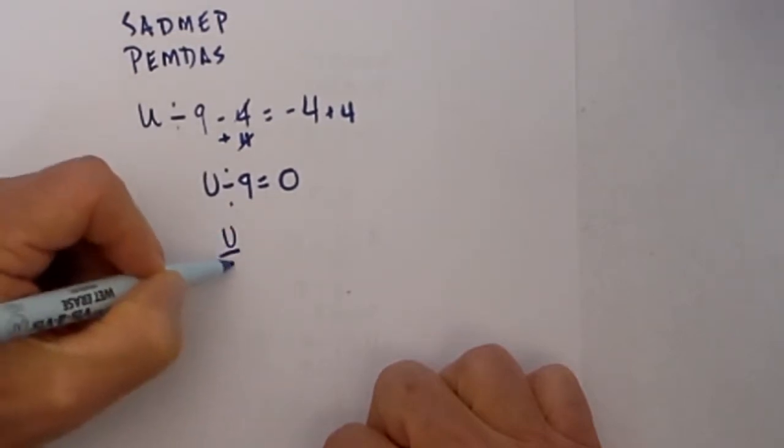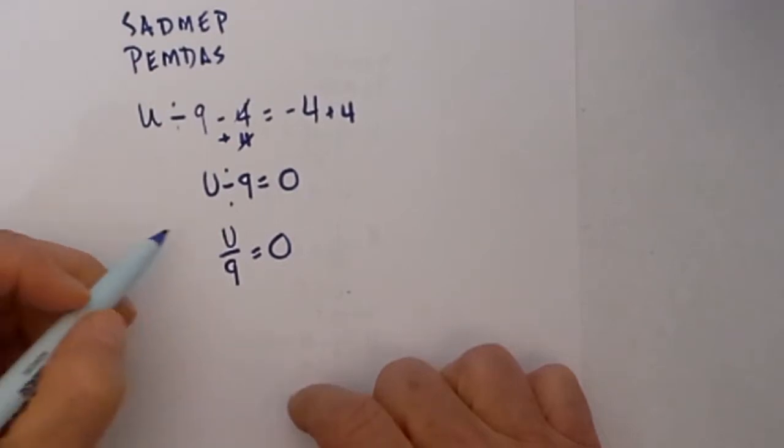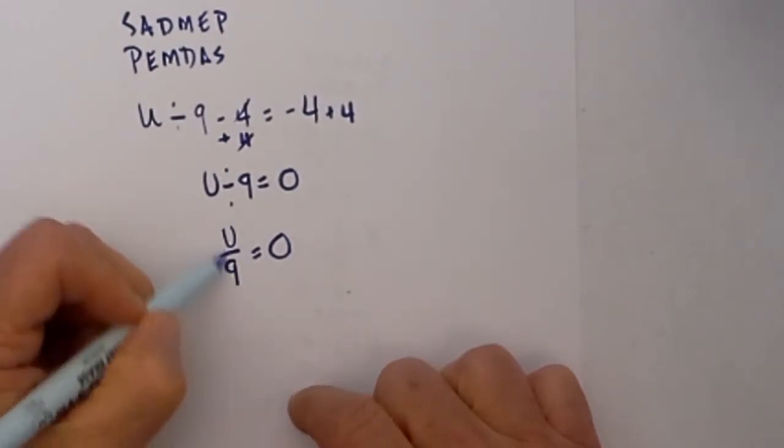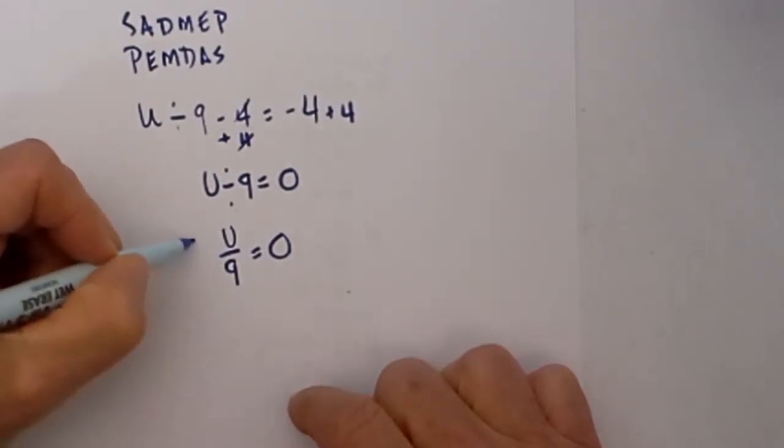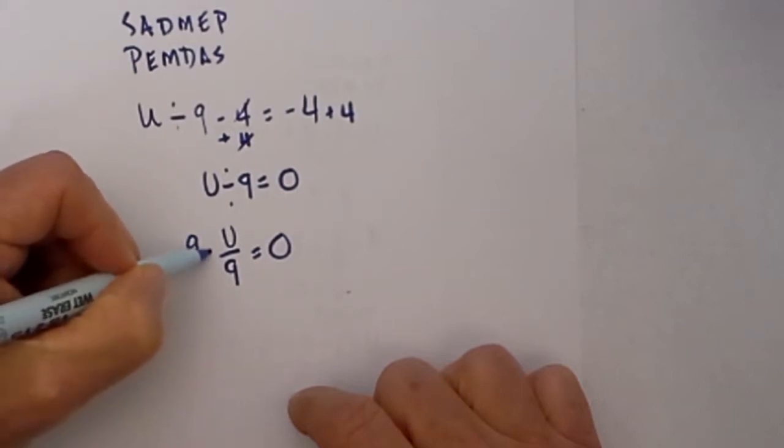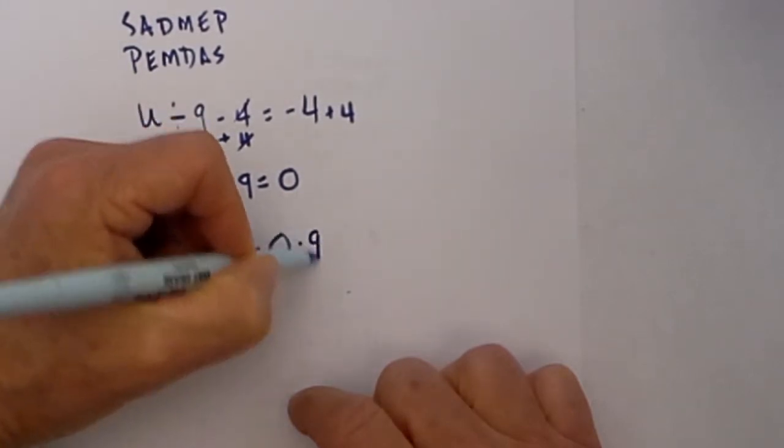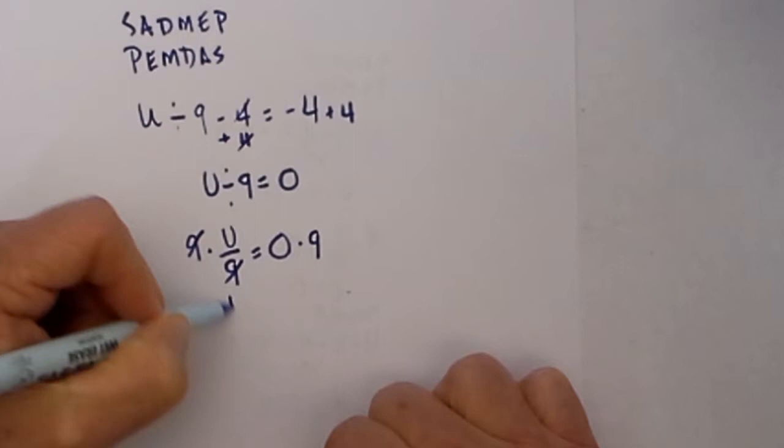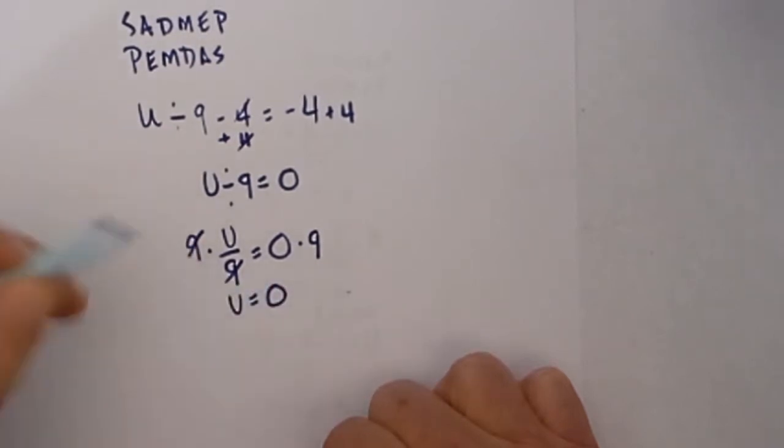I'm going to rewrite this in fraction form so it makes more sense. A fraction is division, so to get rid of that, I'm going to multiply it by 9 and multiply this side by 9. These cancel and u is 0.